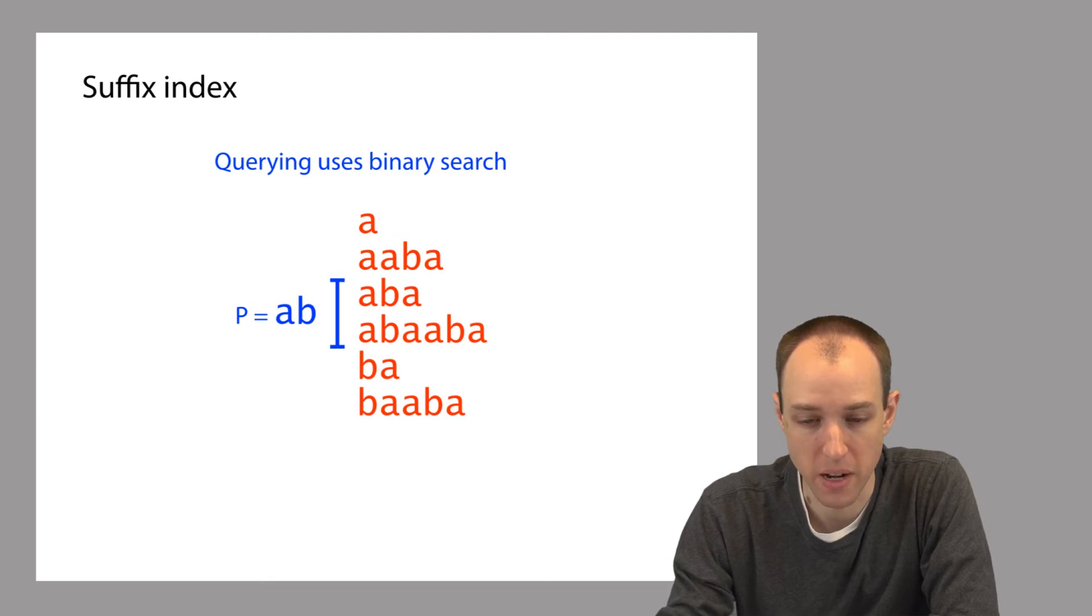So for example, if our query is AB, if our pattern P is AB, then we can use binary search to find all of the suffixes that have AB as a prefix. Because the suffixes are in order, all of the suffixes that share some prefix, that have the same prefix, are going to be consecutive in this list.